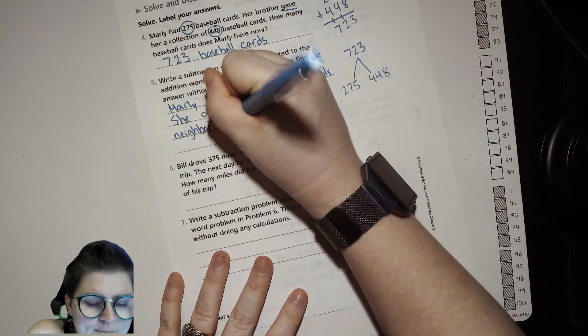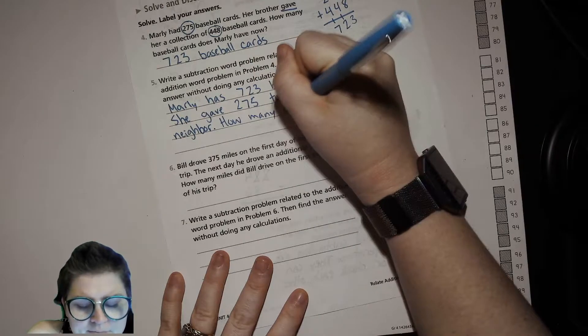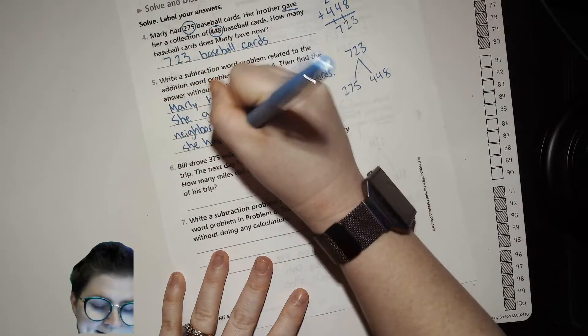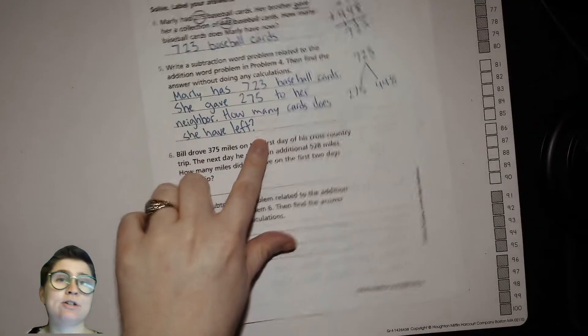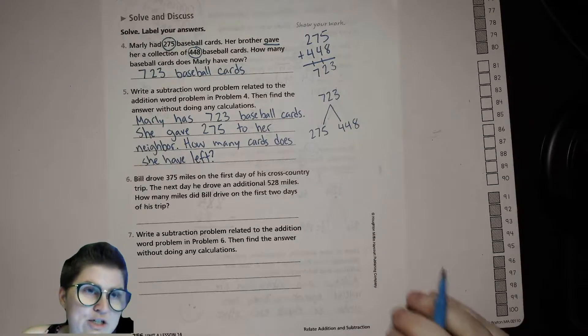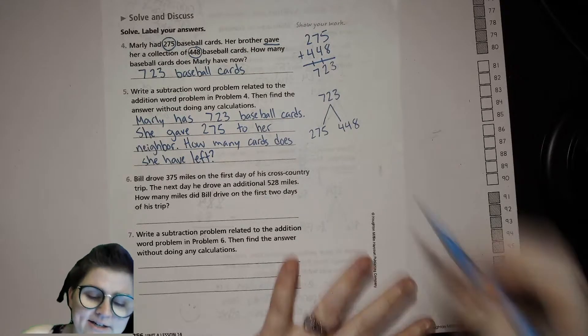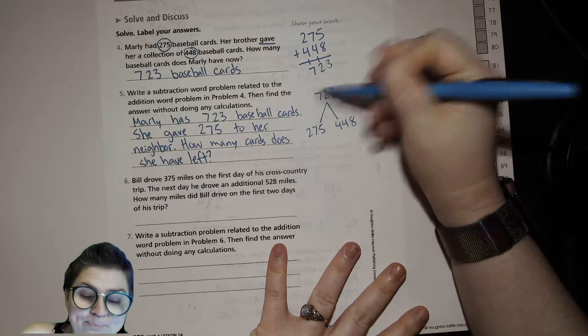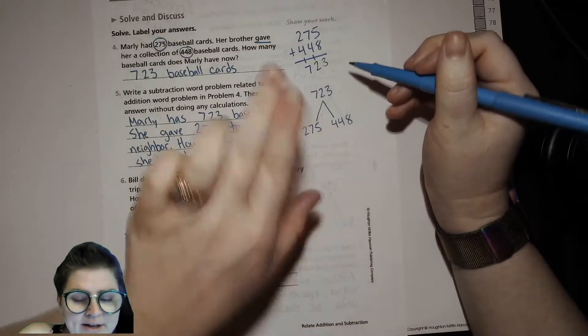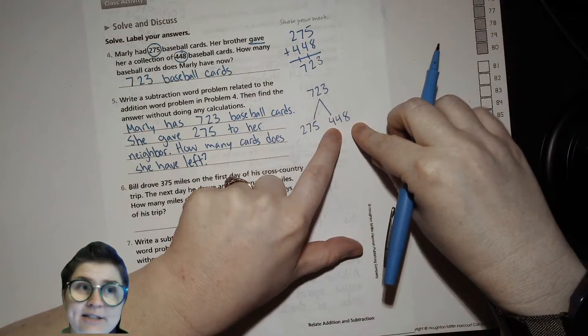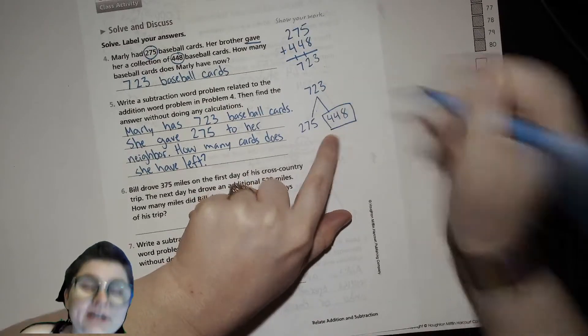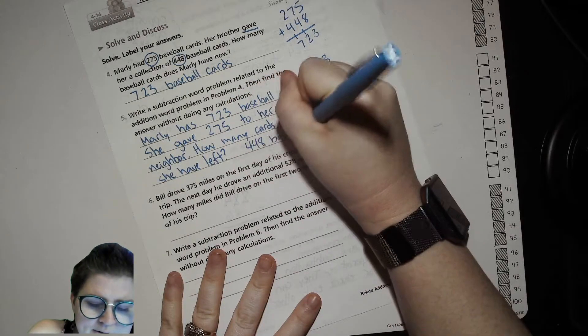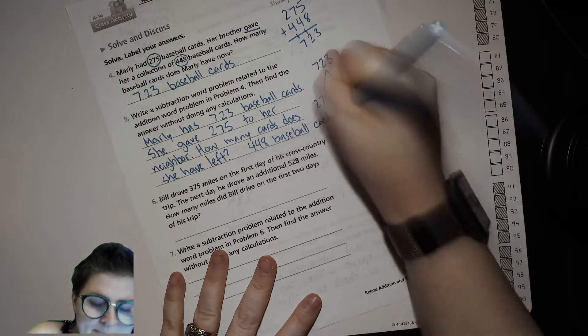How many cards does she have left? Making sure we end with a question mark. Now we're not going to actually do a subtraction problem on this one. We don't have to. We understand the relationship between these three numbers. 275 and 448 together make 723, so if you have 723 and you take away 275, the only thing that it can possibly be left in this entire world is 448. So she has 448 baseball cards.